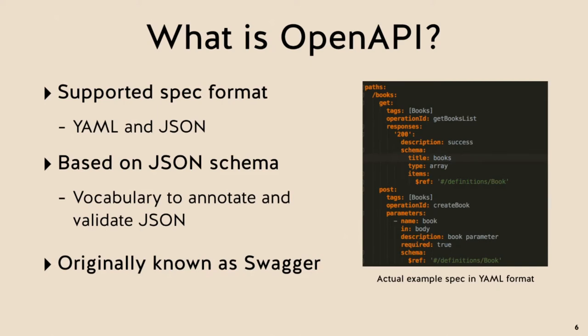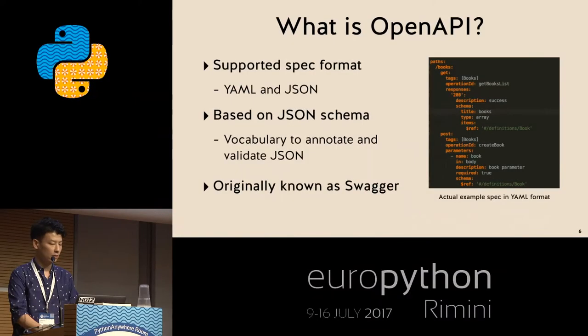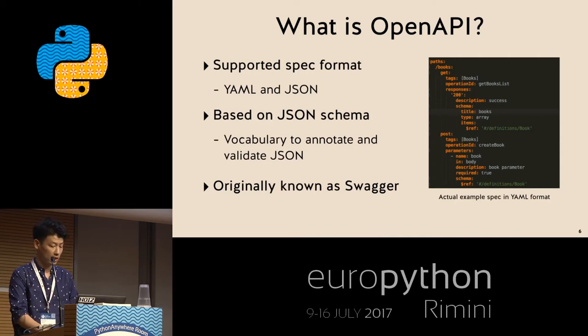OpenAPI is originally known as Swagger. Swagger was renamed to OpenAPI in 2016. In this session I will use the word Swagger often, but do not confuse the two — it has almost the same meaning as OpenAPI.